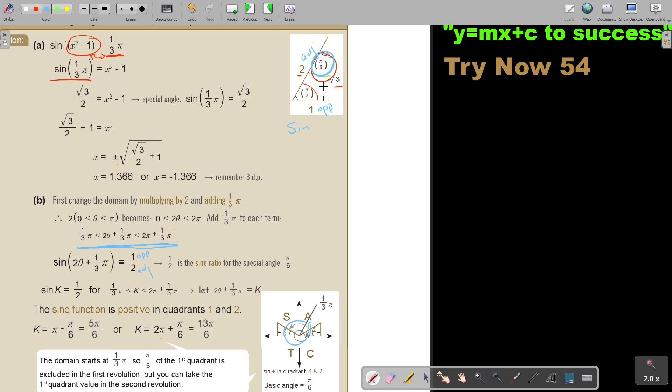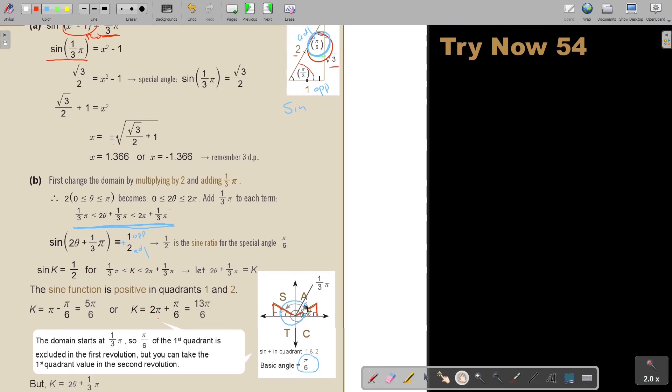Because it's positive, where is sin positive? Sin is positive in the first quadrant and sin is positive there in the second quadrant. The sin function is positive in quadrant 1 and 2. The domain starts there at the third, so I'm missing this one because it starts there. Pi in the first quadrant is excluded in the first revolution, but you can take the quadrant value in the second.